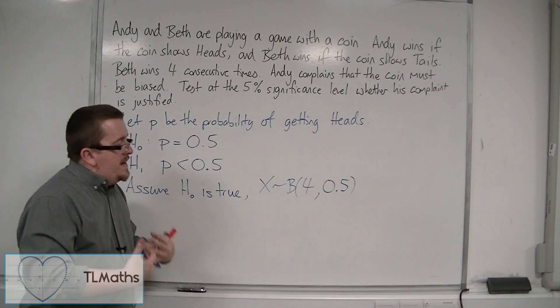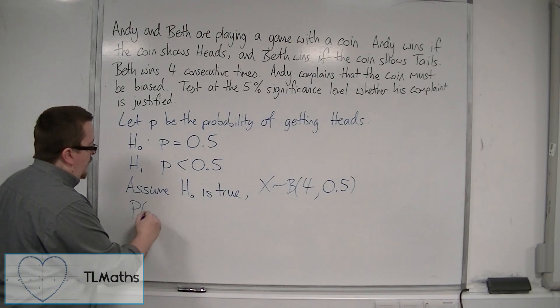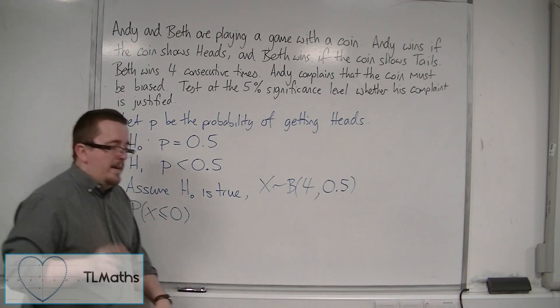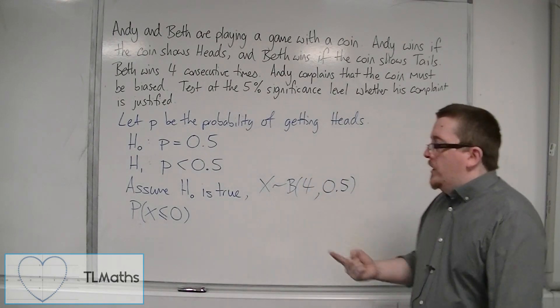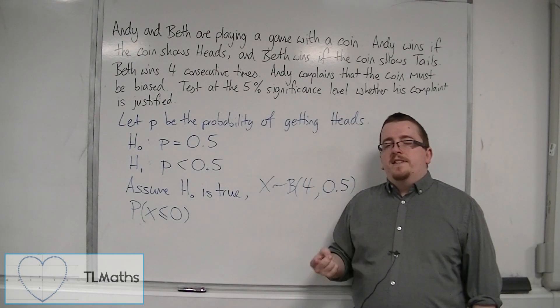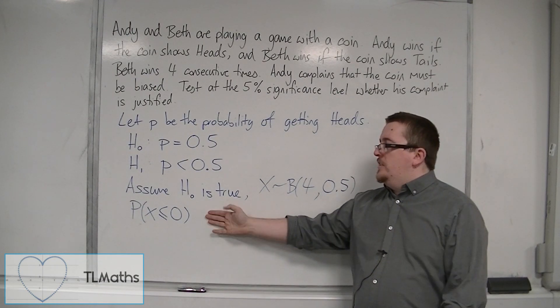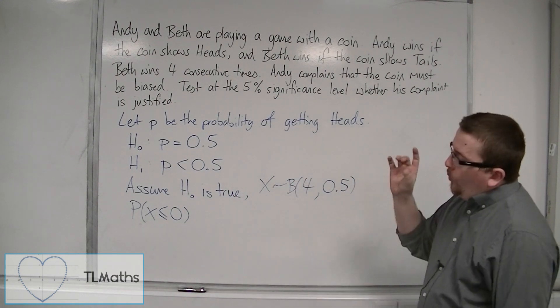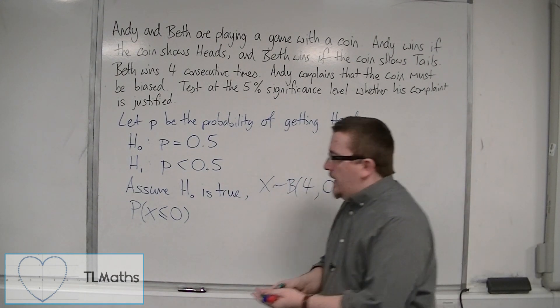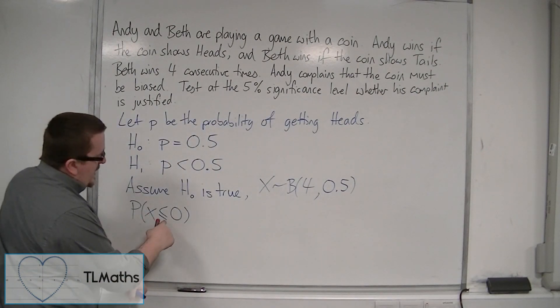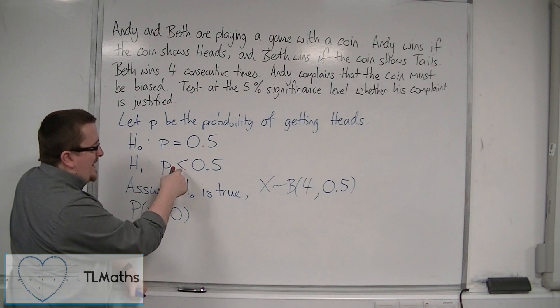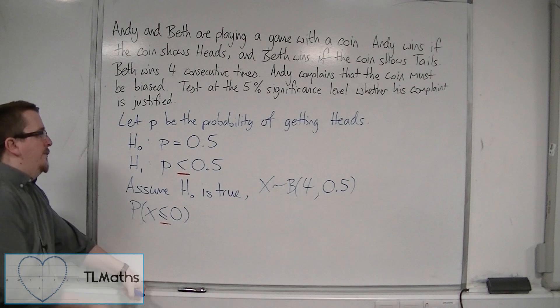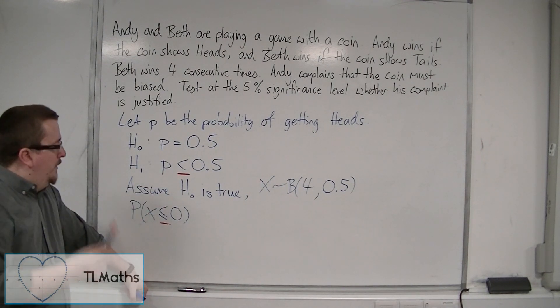So we then need to look at the probability of X being less than or equal to 0. Now, hold on a minute. You're going to probably be looking at that and going, well, why haven't I just written down probability of X being equal to 0? Because that is clearly exactly the same as this. And I agree with you, it is. What I want to highlight is the fact that this inequality symbol here goes in the same direction as that one. So these go in the same direction.